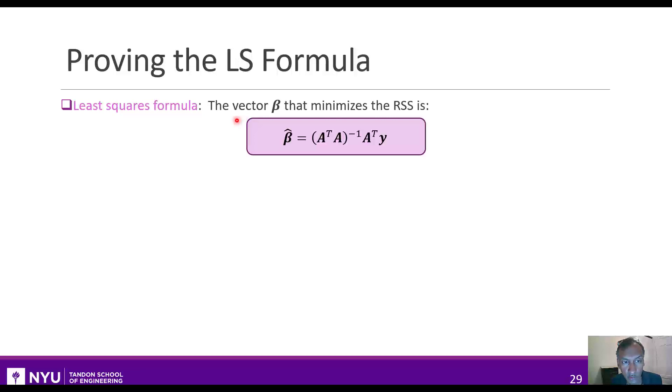If you recall from the previous video, we saw that when in the least squares problem, when we're trying to minimize the RSS, the beta that minimizes this is given by this matrix equation here, where A and Y, A is a matrix and Y is a vector.